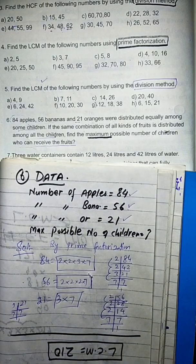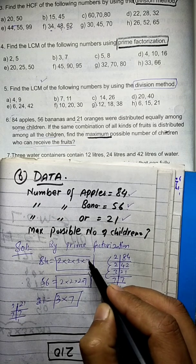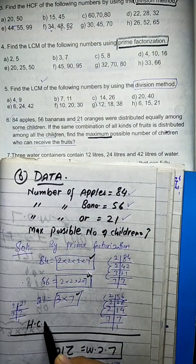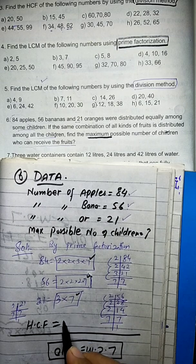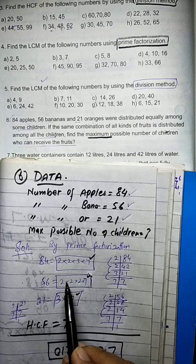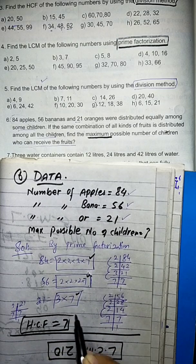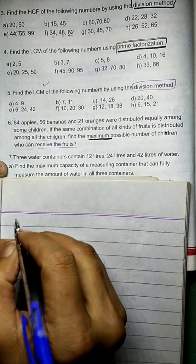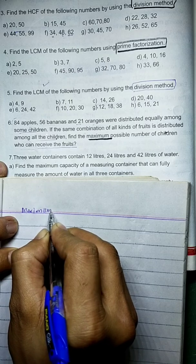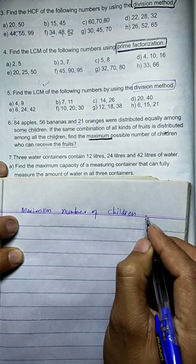Now checking which common factors are present in all three numbers: the factor 7 is present in all three. So the HCF of 84, 56, and 21 is equal to 7.